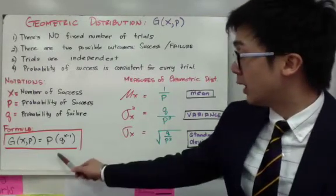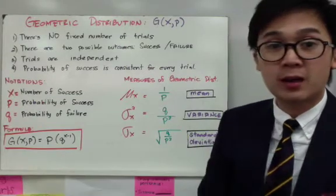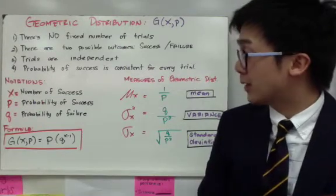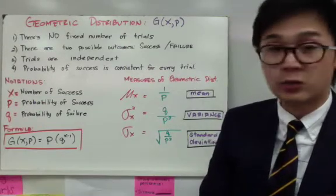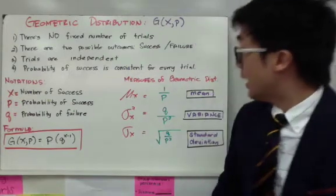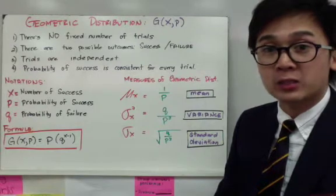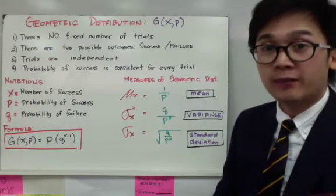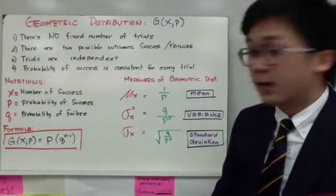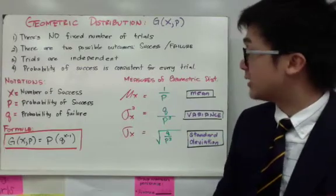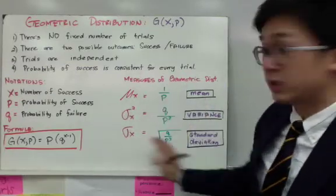This will be the formula for finding the probability of a geometric distribution: P times Q raised to X minus 1. Now, the measures of a geometric distribution, like binomial distribution, we have mean, variance, and standard deviation. However, the formula will be different for this particular distribution.